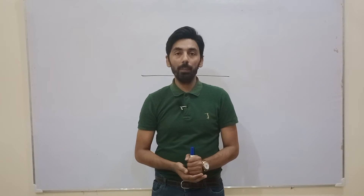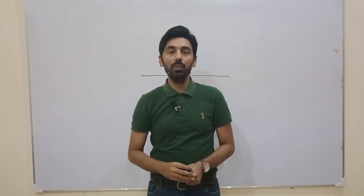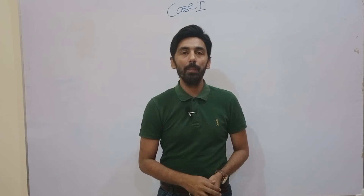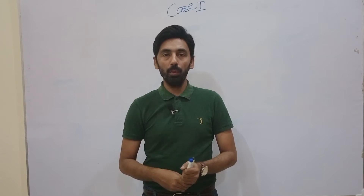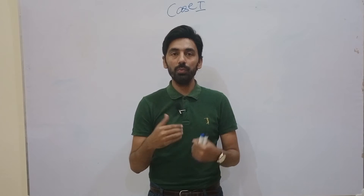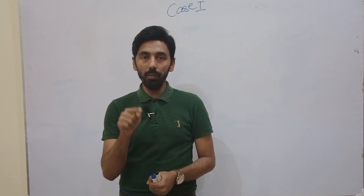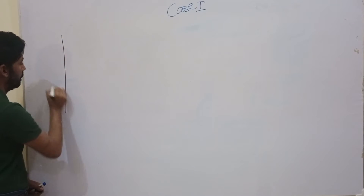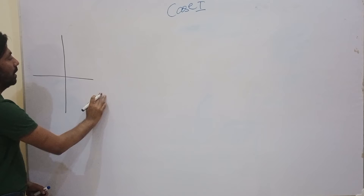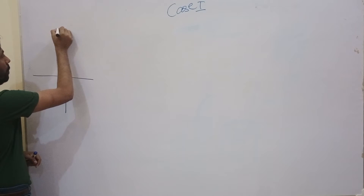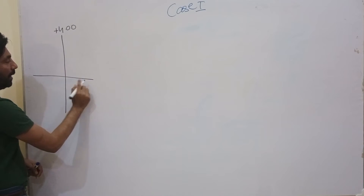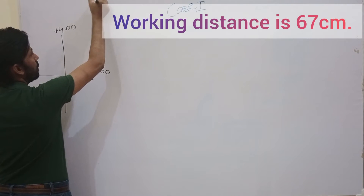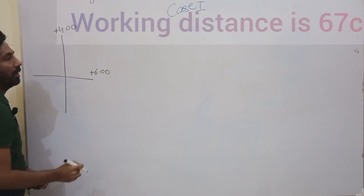In the case of myopia more than 1.5 diopters, we observe against movement. Now let's discuss different optical cross examples. Suppose we have a patient with hypermetropia. In hyperopia we always observe with movement and we neutralize it with plus spherical lenses. We make an optical cross — 90 and 180 meridian — suppose the 90 meridian is neutralized at plus 4 and the 180 meridian is neutralized at plus 6.